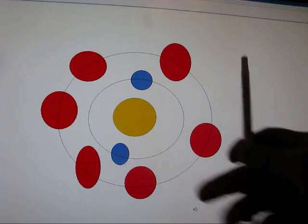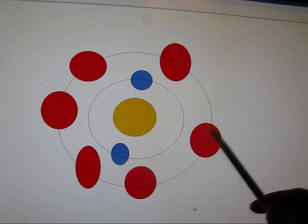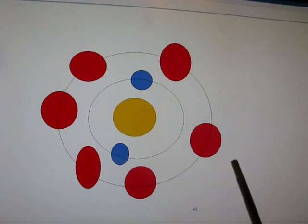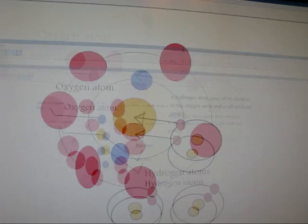An interesting thing about this is that, even though this only has six electrons, the outer circle has a capacity of eight electrons, which is a big part in electrolysis, in the process of electrolysis.